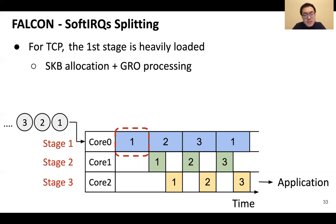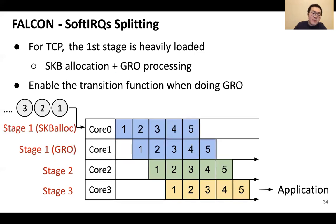So we proposed the second design: software interrupt splitting. With dynamic tracing, we found that the first stage of TCP packet processing is mainly dominated by two functions: SKB allocation and GRO processing. We implemented it by enabling the transition function when entering the GRO routine. In this way, we successfully split one heavy software interrupt into two lighter software interrupts.